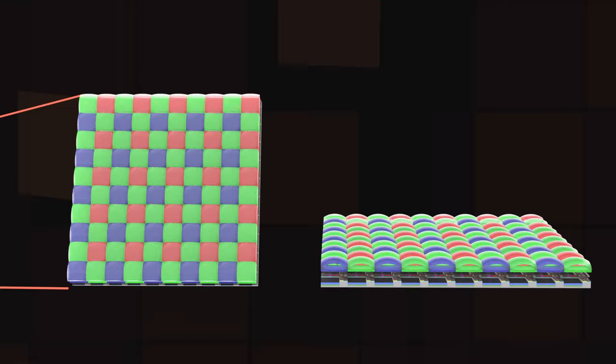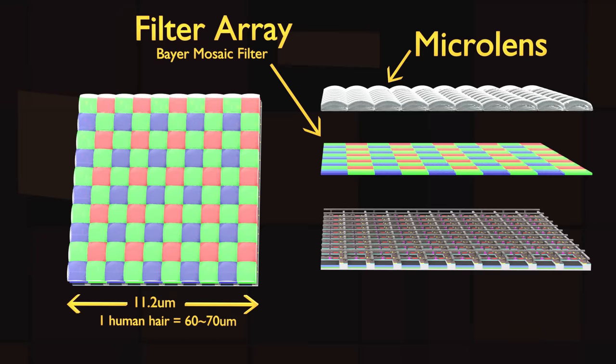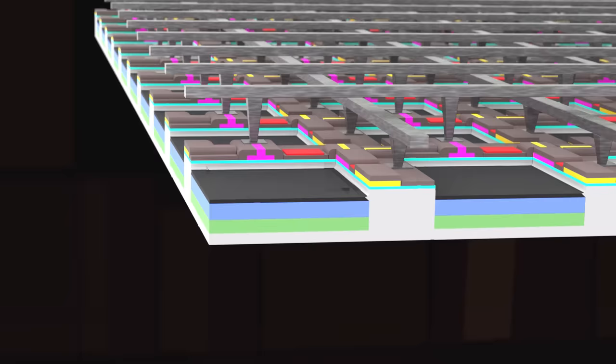A microlens and color filter are placed on top of each individual pixel to first focus the light, and then to designate each one as red, green, or blue, thereby allowing only that specific range of colored light to pass through and trigger the pixel. The highlighted zone is the actual light-sensitive region called the photodiode.